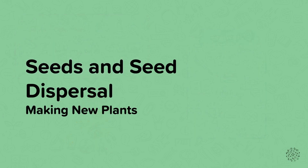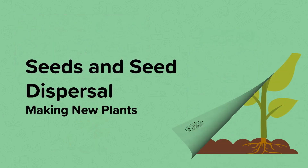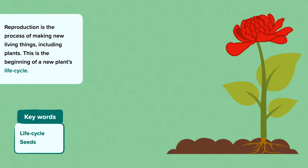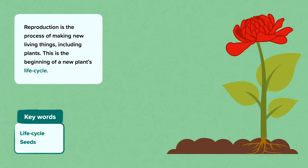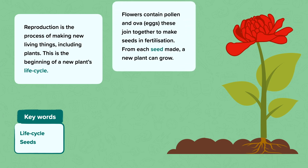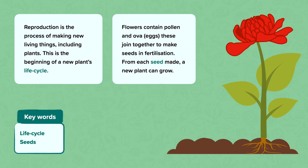Making new plants. Reproduction is the process of making new living things, including plants. This is the beginning of a new plant's life cycle. Flowers contain pollen and ova, which are eggs. These join together to make seeds in fertilisation. From each seed made, a new plant can grow.